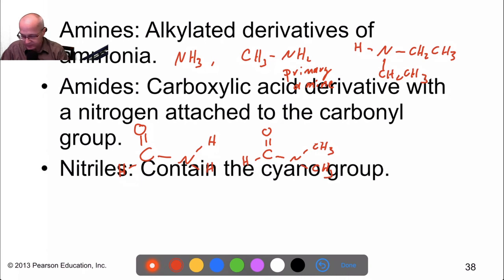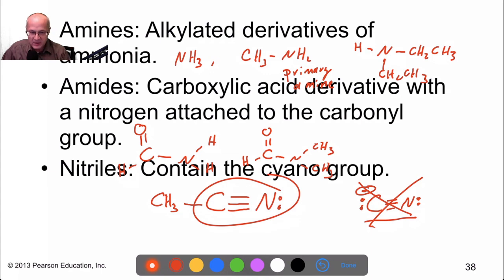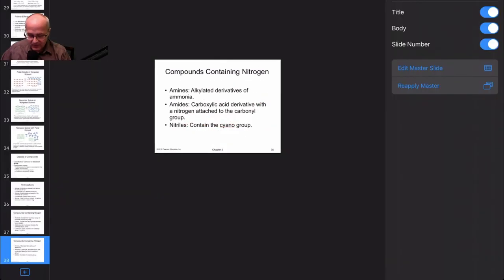And, finally, nitrile. This is nitrile. This is not cyanide. Cyanide is this. This is cyanide. This is not nitrile. Nitrile is bonded to a carbon or a hydrogen. Cyanide is an anion.